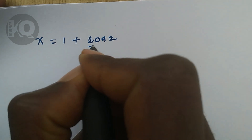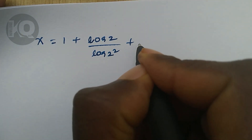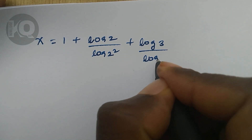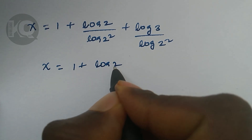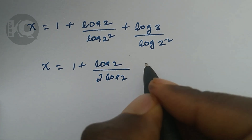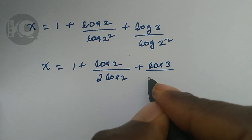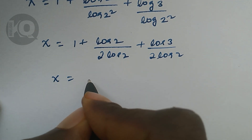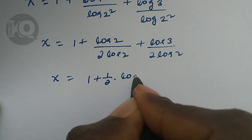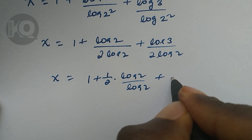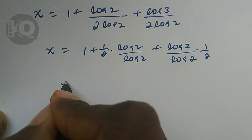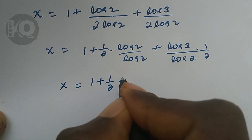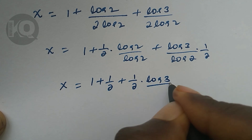So X equals 1 plus log 2 divided by log of 2 squared, plus log 3 divided by log of 2 squared. Applying the power rule of logarithm, log of 2 squared equals 2 times log 2. So X equals 1 plus log 2 divided by 2 log 2, plus log 3 divided by 2 log 2. This simplifies to X equals 1 plus 1 over 2 plus 1 over 2 times log 3 over log 2.